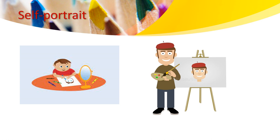You can see the image on the left — he has a mirror in front of him and he is drawing himself. There are a lot of artists that drew themselves, such as Vincent van Gogh. If you look at the right, you can also see on the canvas the same picture of that person. This is what we call a self-portrait.